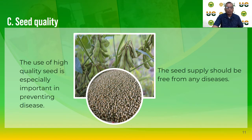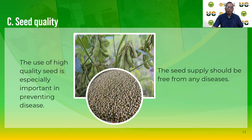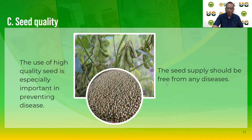Another avoidance technique is seed quality. The use of high-quality seeds is especially important in preventing diseases. Make sure that when you plant, you have good quality seeds so there is no source of pathogen. Supplies should be free from any diseases. Planting physically sound seeds is important — a crack in the seed coat may serve as an entry point for soil-borne microorganisms that may cause rotting of seeds once planted.